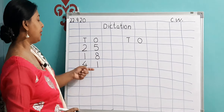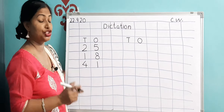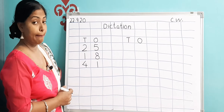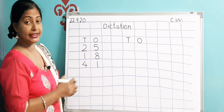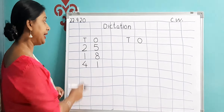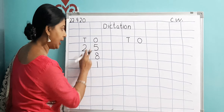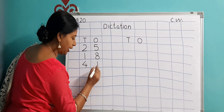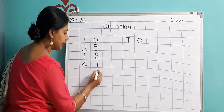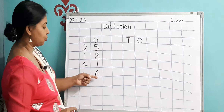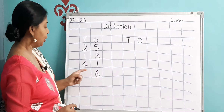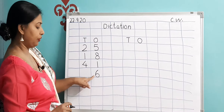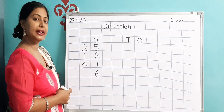Next number is a single digit number — 6. Only number 6. That means you will write it under the Ones column. This is the Ones column — single digit, one digit number. So you will write 6 here. You are not going to write it in the Tens column, otherwise it will be wrong. This is number 6.